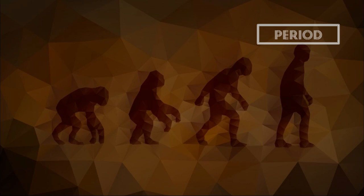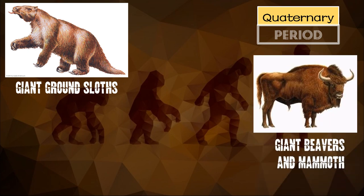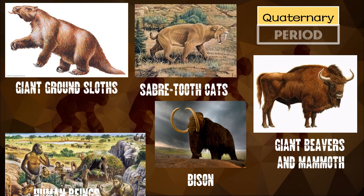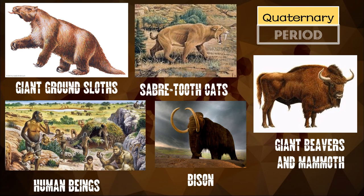Under the Cenozoic era, we have the Quaternary period. The Quaternary period began approximately 2 million years ago and continues into the present. The notable events in the Quaternary period were the Ice Ages that began 2 million years ago and lasted until 10,000 years ago. Life forms during the Quaternary period included the Giant Ground Sloths, Giant Beavers and Mammoths, Bison, Sabertooth Cats, and Human Beings. Human beings evolved and are present already under the Quaternary period.